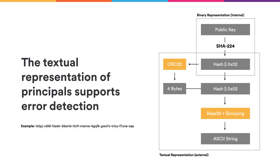I'd like to mention a few details about the format of the principles we use. We start with a public key encoded in DER format and use SHA224 as a hash function, resulting in a 28-byte string. We append a single byte that only serves to differentiate principles derived from public keys from ones we use elsewhere in the Internet Computer, such as for canisters. Those 29 bytes are the internal binary representation of a user's principle. When converting a principle to its textual representation, we first prepend a CRC32 error detection code, then encode the resulting string in base32, and finally build groups of five characters each separated by dashes. The format has been chosen to support easy copy-pasting with appropriate error detection, while still allowing for less than 64 characters ASCII representation for compatibility with Internet protocols such as DNS.